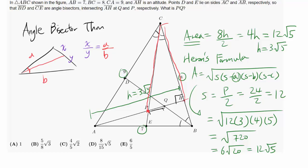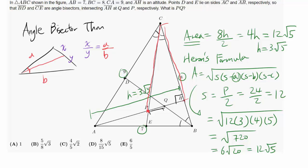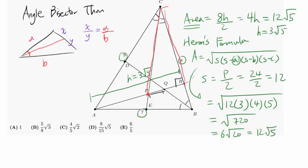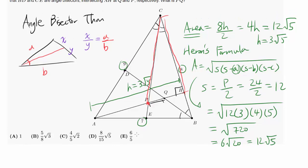Looking at this, I see triangle ACH is a right triangle, so we can use the Pythagorean theorem since we know two sides. We have 9 squared equals (3√5) squared plus CH squared: 81 equals 45 plus CH squared, so CH squared equals 36, meaning CH equals 6.